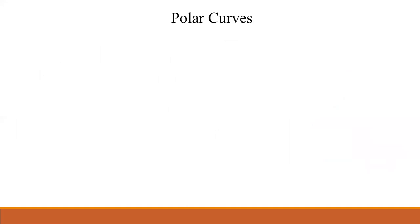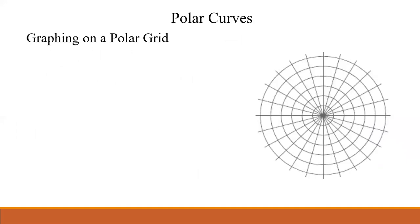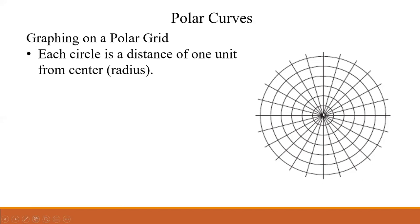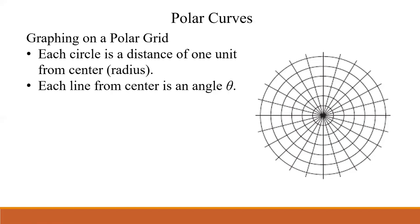Now, what about polar curves? We can graph functions just like in the xy plane, but these are going to look a little bit different. A polar grid is easiest to visualize like a spider web — each circle represents a radius of one unit from the pole, so the inner circle is one unit away, the next is two units, and so on. Each line is at a certain angle theta. Angle zero is still the positive x-axis. Usually we mark angles in radians, traditionally in multiples of π/12, which is 15 degrees.